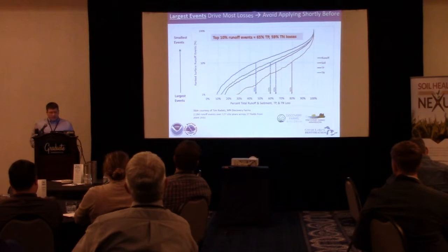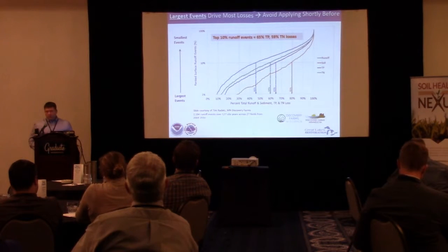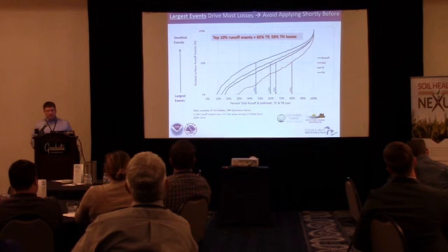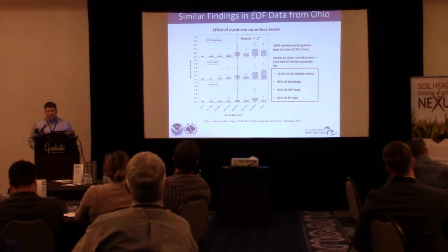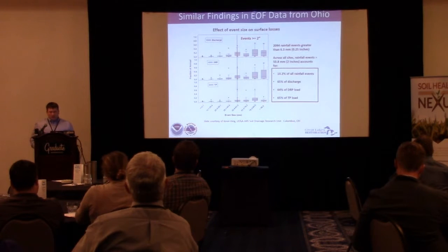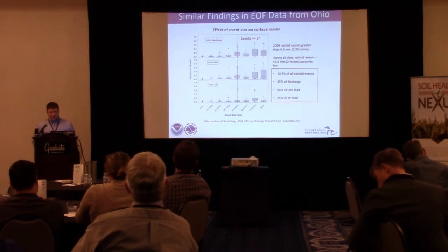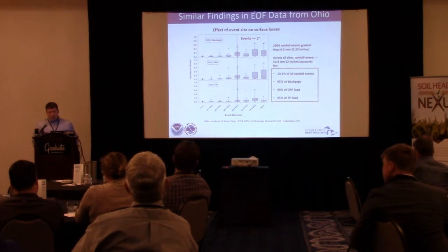Dealing with the largest events: this is again edge-of-field data from Discovery Farms. They racked and stacked their 2,000 events and found that the top 10 percent of runoff events contribute nearly half of the runoff and over 60 percent of the nutrient loads. If we can identify these larger events and avoid putting more nutrients on right before them, hopefully we can make a difference. Down in Ohio they found something similar — the top 10 percent of events account for 65 percent of the runoff and the nutrient loads. It's a big bang for your buck if we can identify and delay nutrient applications before these events.